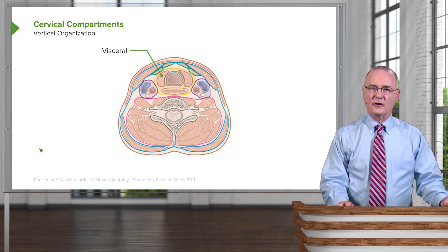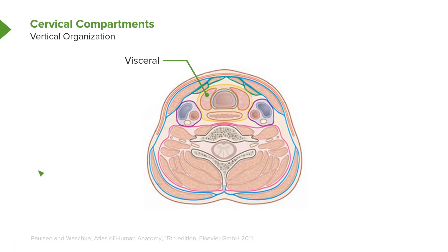Here we're looking at the visceral compartment right in through here. It is surrounded by a yellow line which is a sheath. The visceral compartment contains the thyroid gland — one lobe here and the opposite lobe here. We also see the trachea, and then lying posterior to the trachea, we have the esophagus.